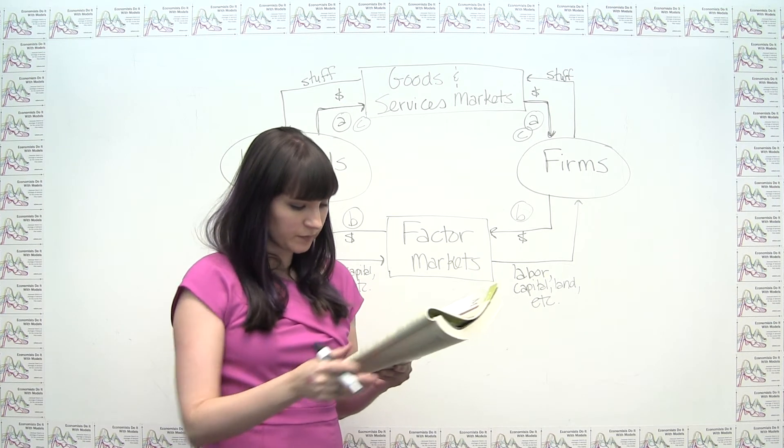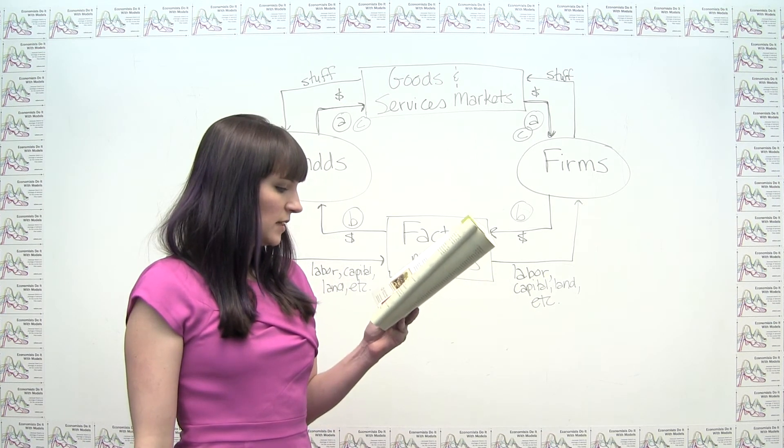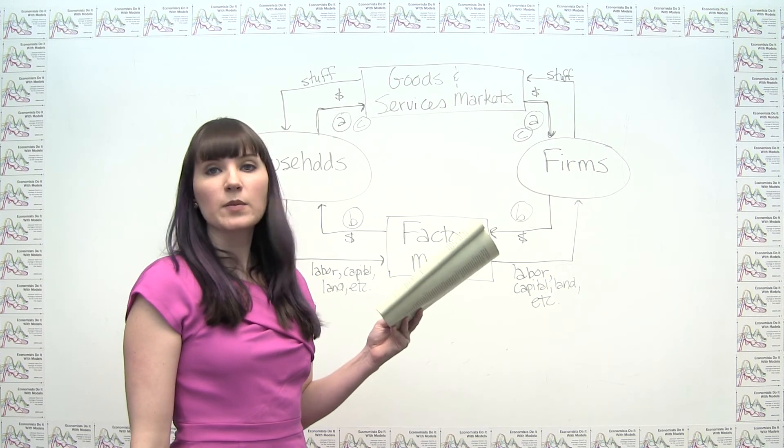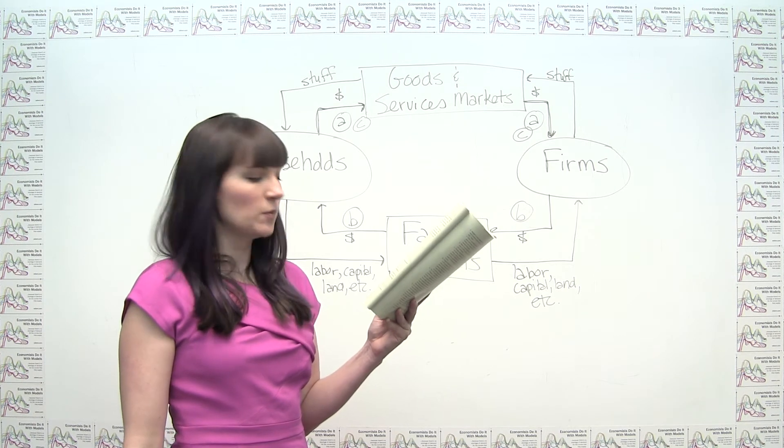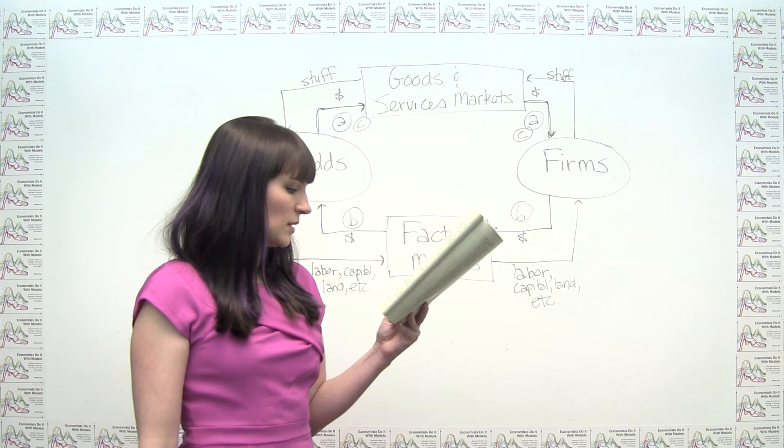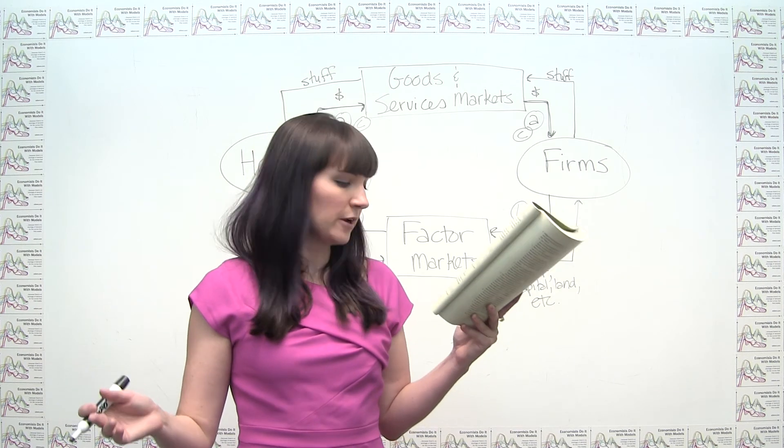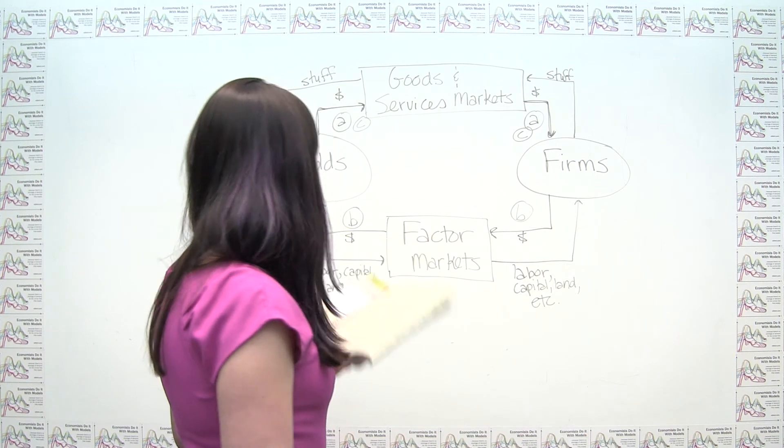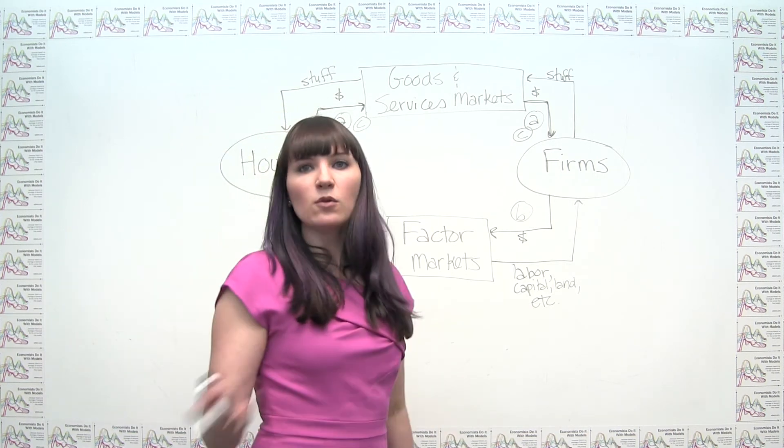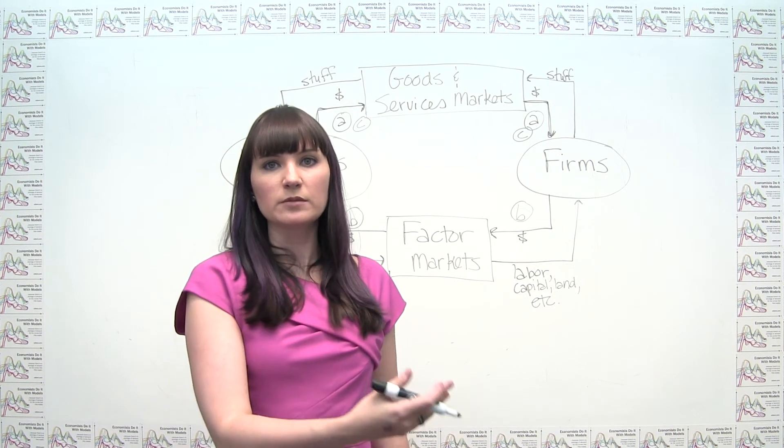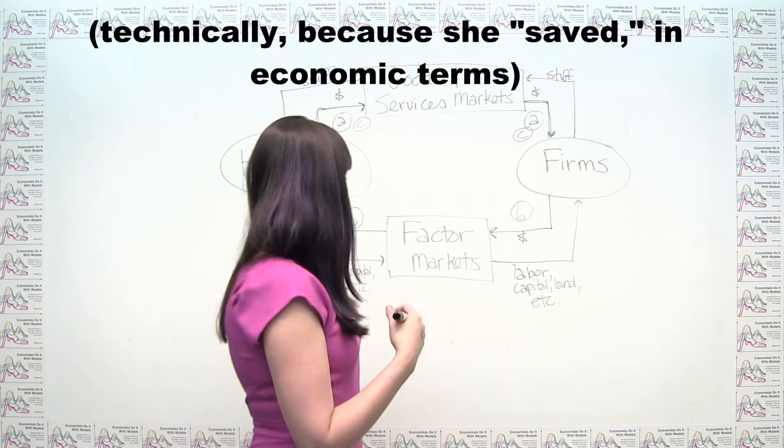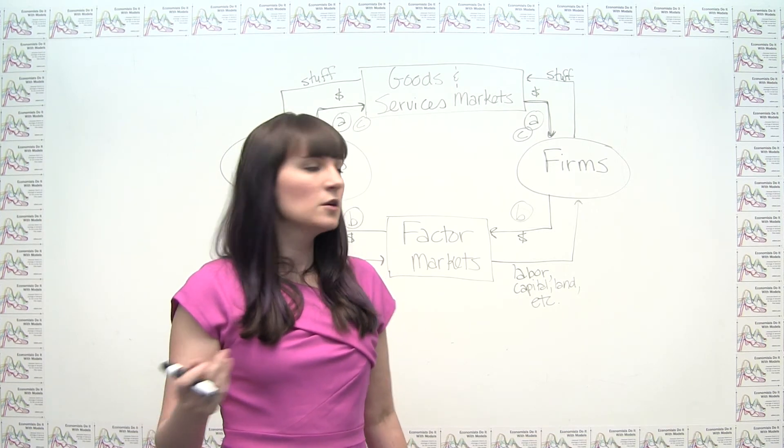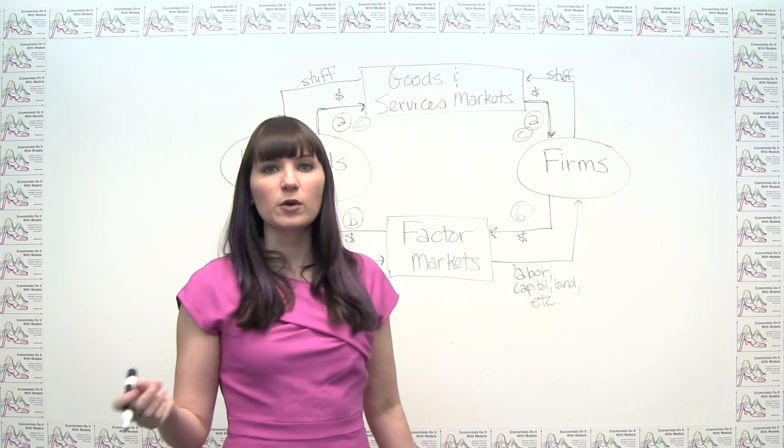And last but not least, it says Sally earns $10,000 from her 10% ownership of Acme Industrial. Apparently, Acme Industrial is much smaller than you would expect the average company to be, given that this 10% ownership doesn't seem to be getting her that much money. If I owned 10% of Apple, I'd be doing a little bit better than this. But nonetheless, she's getting some money. And so why is she getting money? She's getting money because she made an investment, because she supplied financial capital to a firm.